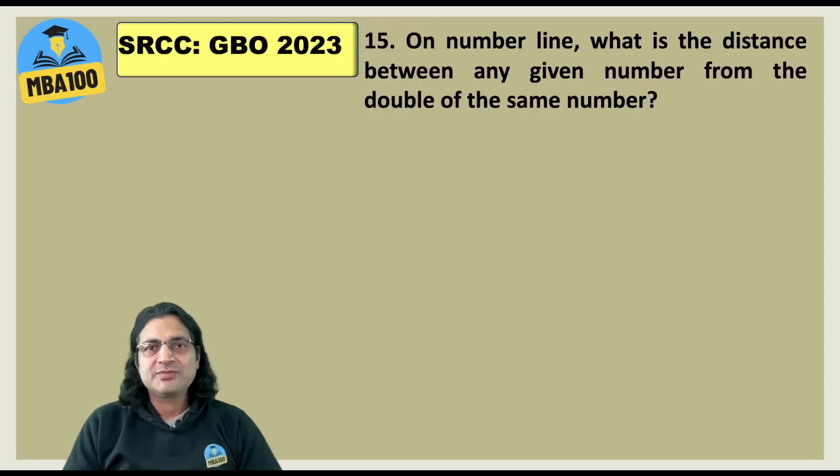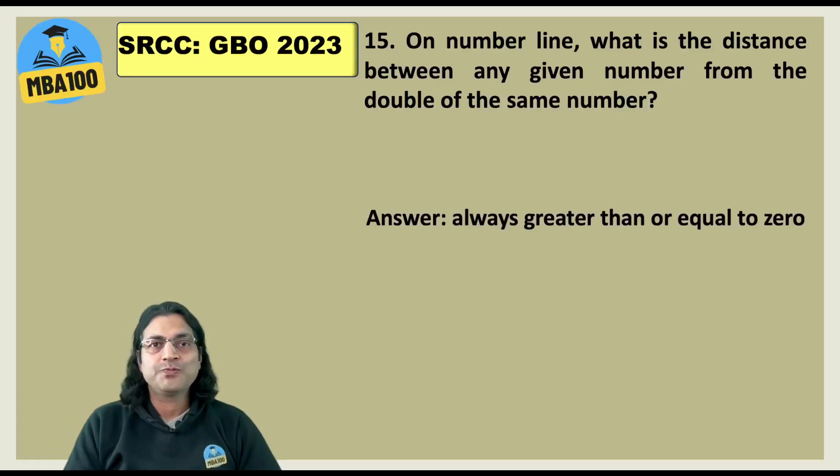On number line what is the distance between any given number from the double of the same number? Double of 0 is 0. Please keep that in mind. And all those people who kept that in mind got this answer. So now they are going to get one mark for this.